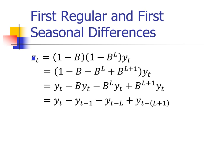I can put it all together. Z sub T equals 1 minus B times 1 minus B to the power L — that's the first regular difference and the first seasonal difference. So it's 1 minus B to the power 1 times 1 minus B to the power L to the power 1 — first regular difference, first seasonal difference.